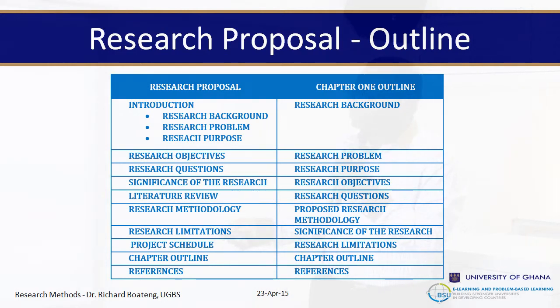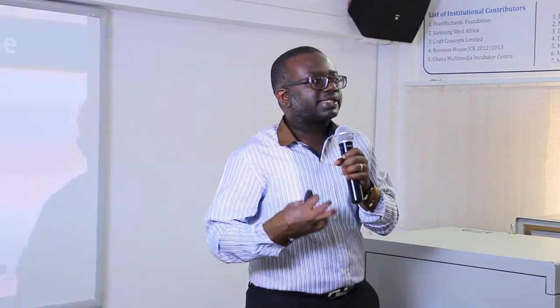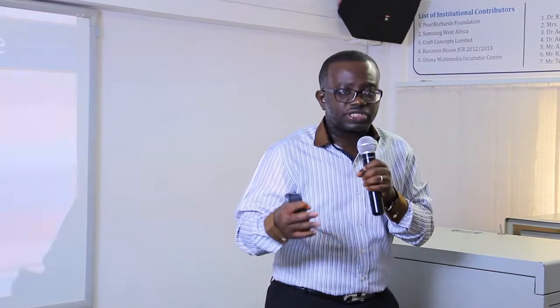The components are: the introduction comprising your research background, problem and purpose; then research objectives, research questions, significance of research, literature review, proposed research methodology, research limitations, project schedule, pre-chapter outline, and references. If you compare it with chapter one — if you remove the literature review and the project schedule, you get your chapter one. So whenever you get your research proposal accepted, you have actually written your chapter one already. An accepted research proposal can be converted to a chapter one, which leads you directly to chapter two, speeding up your time.